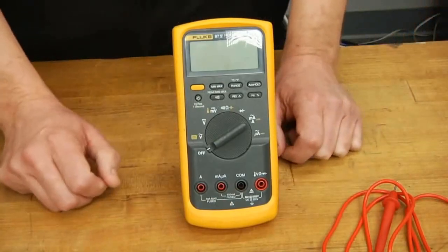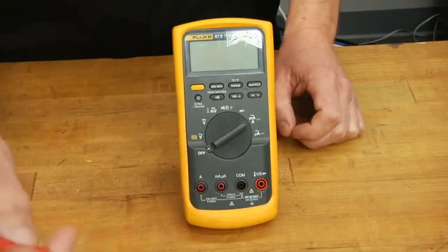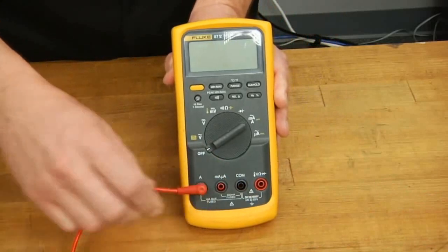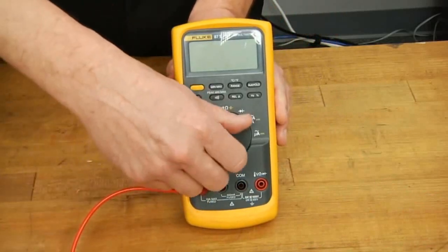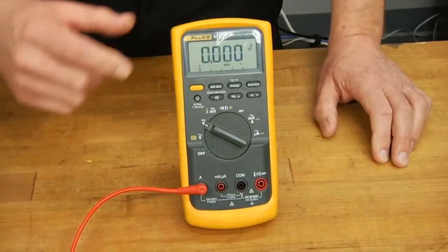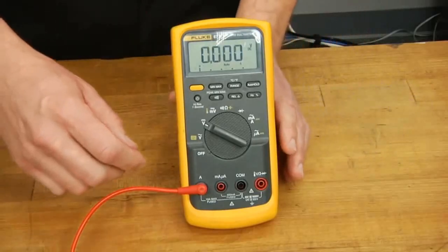Before we use the meter, we should first check the fuses. To do this, we insert our red lead into either the amp terminal or the microamp terminal and then turn the meter on to any position other than the amp setting. If you hear a beep and see the word lead at the top display, you know that the fuse is working properly.